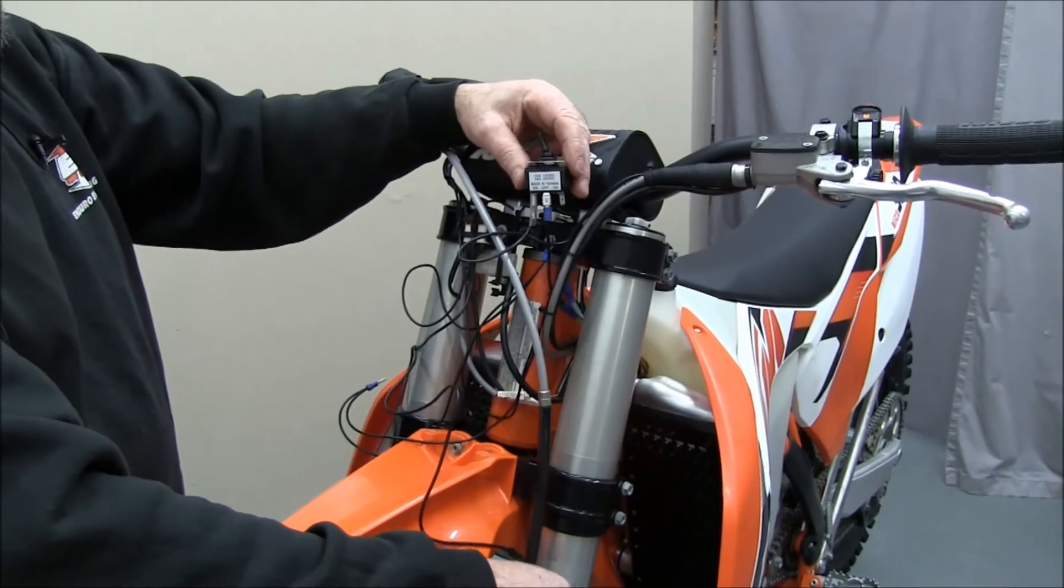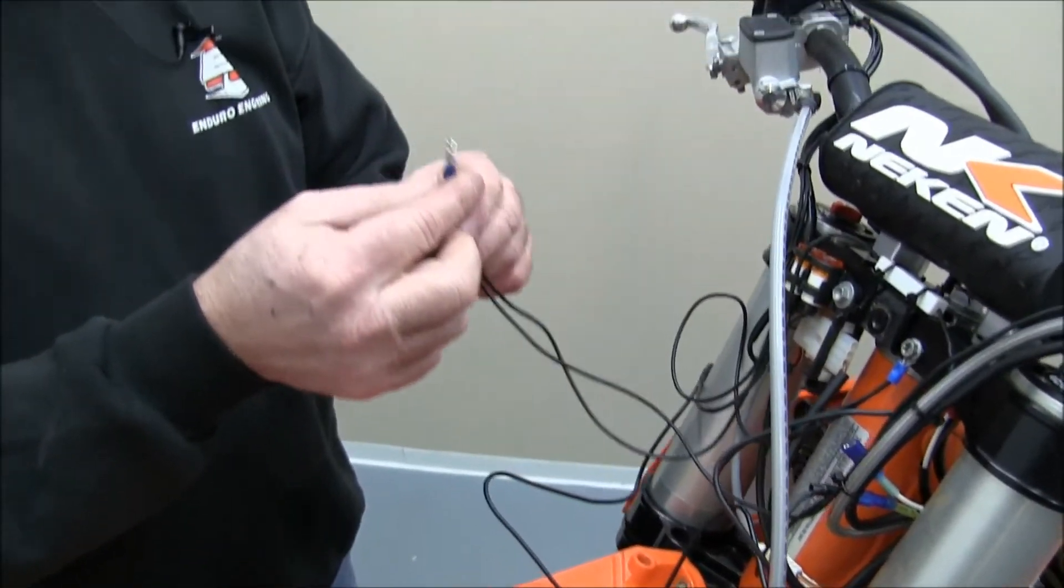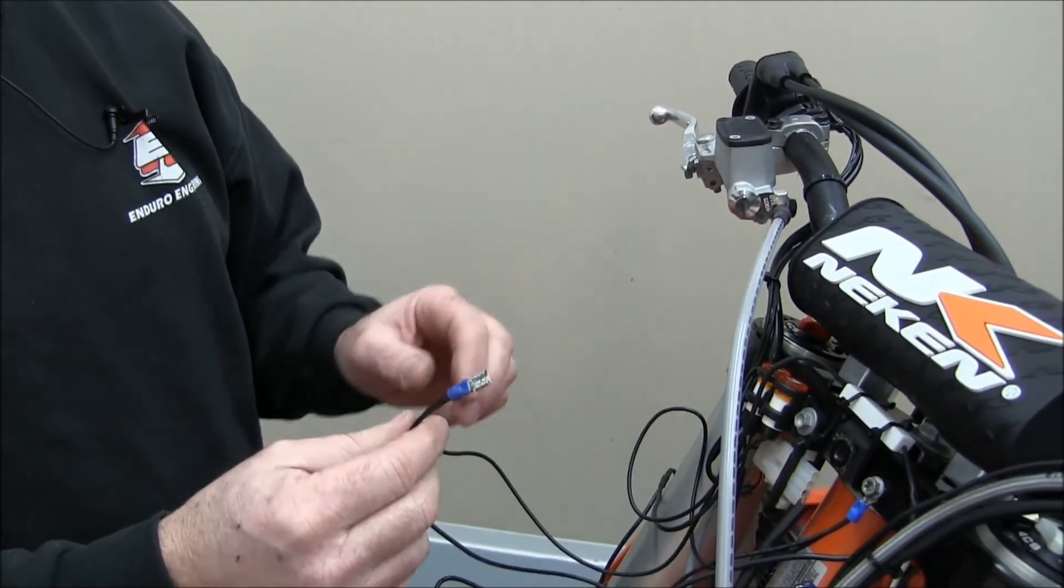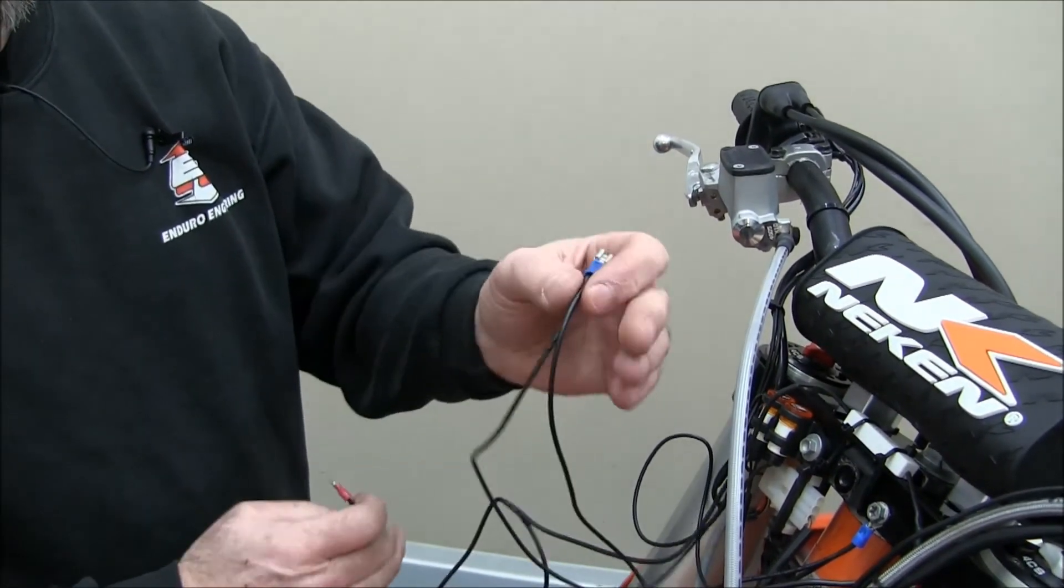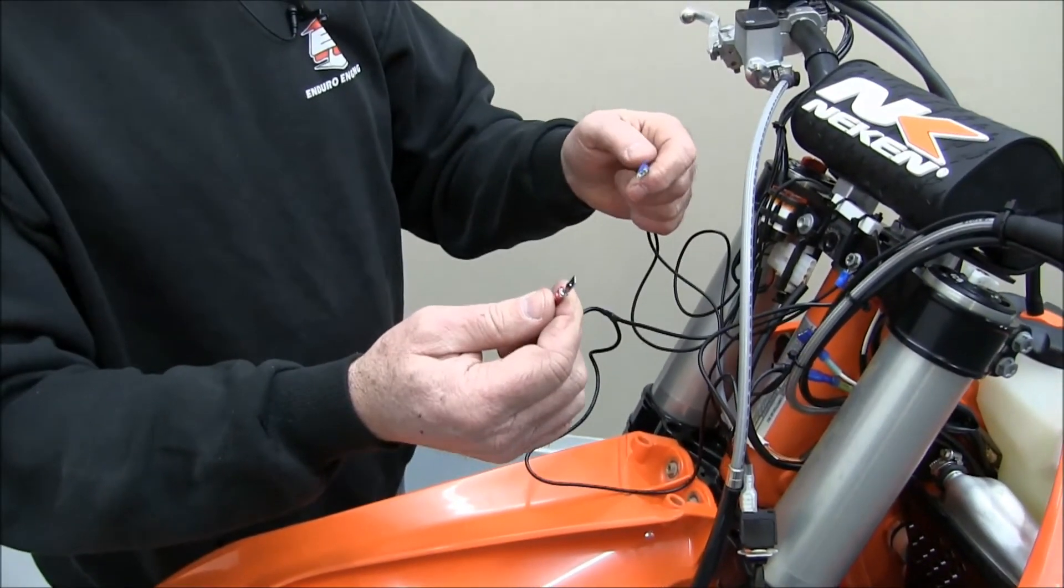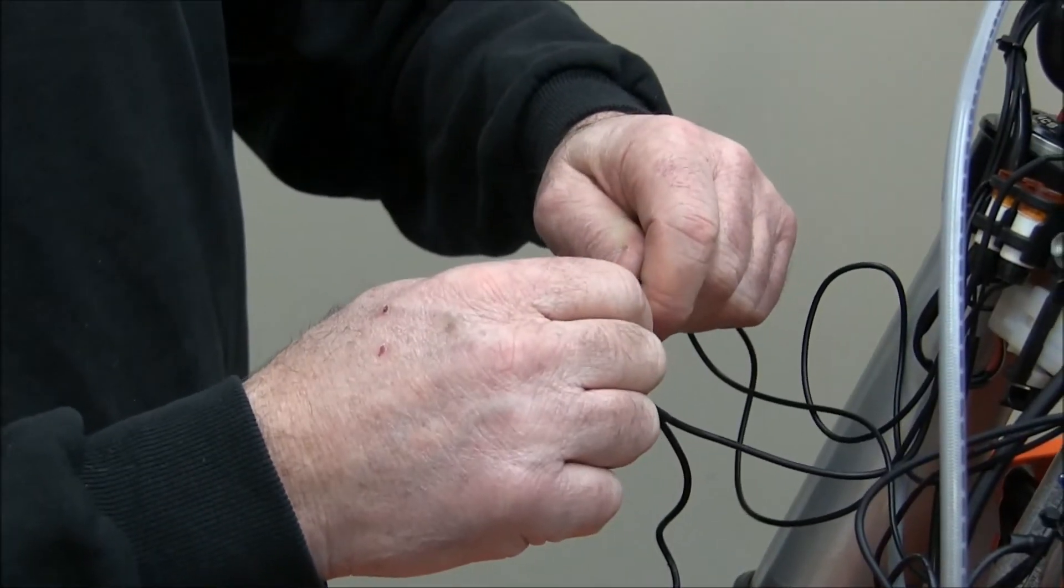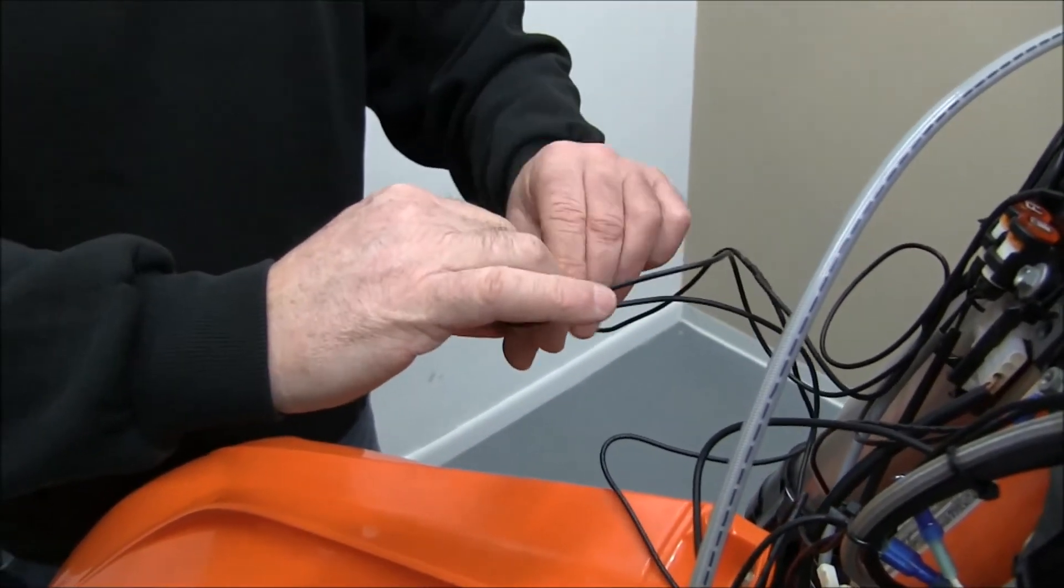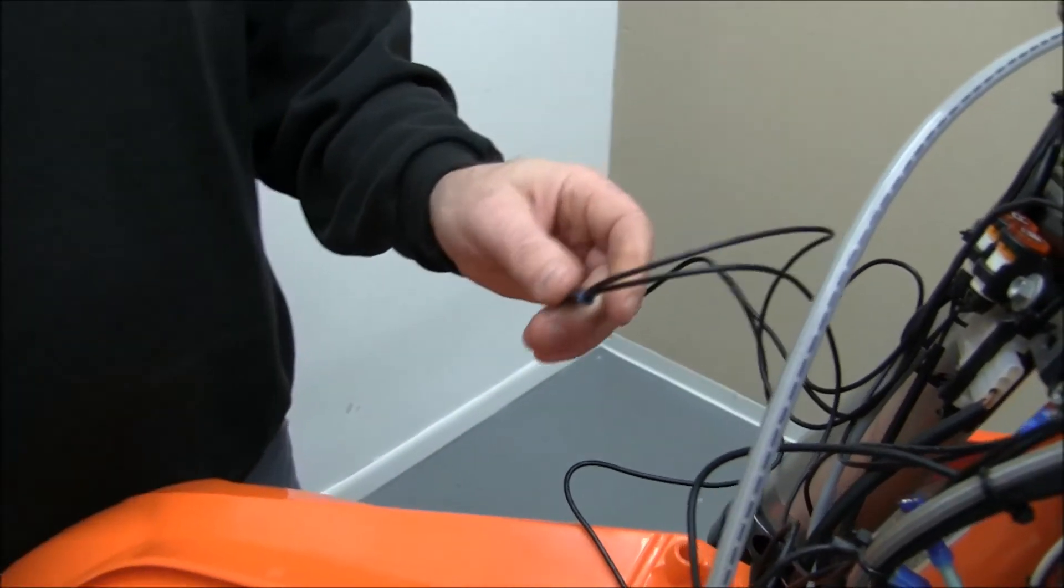These two wires here that we crimp together are the two hot wires, one for the left side grip and one for the right side grip. They have to be connected to the wire, the Y wire, the one where it splits off, that will give them power from the switch. Just make sure the tape covers all the metal on the connector and you'll be fine.